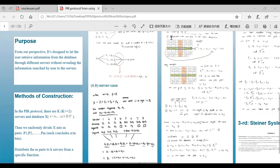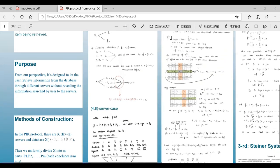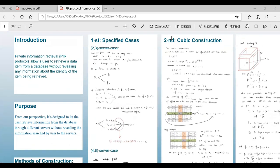Then, let's see the simplest example of the PIR codes, which is the 2,3 server case.